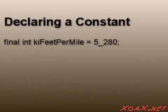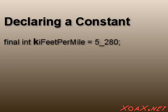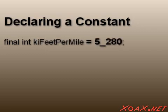To declare a constant of a particular type, we use the same exact syntax that we use for variables, except that we put the word final in front of the declaration. The word final is used to indicate that its value cannot be changed. I use a k at the beginning of the name to signal that this is a constant. Note that constants should always be assigned a value immediately in their declaration, since their value cannot be changed.